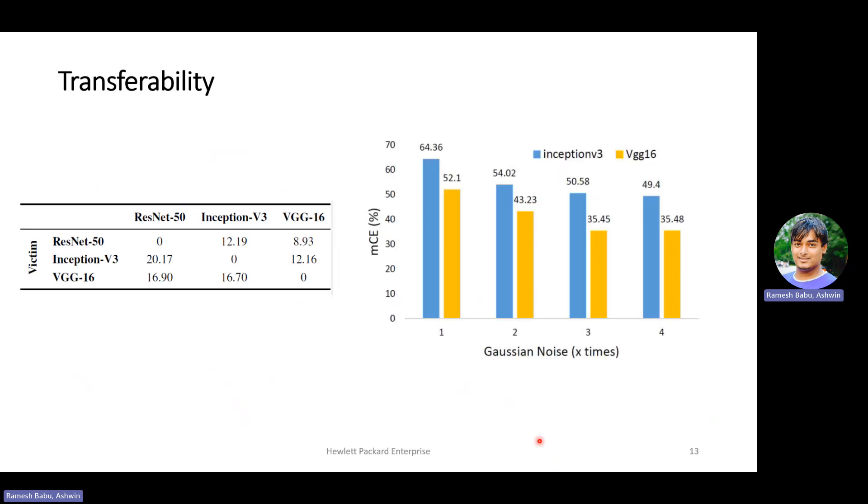Similarly, we look at the transferability of our approach, where we have a model as a base to generate adversarial samples. We evaluate the effect of the generated adversarial samples with one architecture as a base on the other architectures. For example, here on the first row, you can see that we evaluate the samples generated with ResNet 50 on the Inception V3 and VGG16. Similarly, we perform the same on the other two models as well. It can be observed that there is a good transferability across the other architectures based on our results on the table on the left.